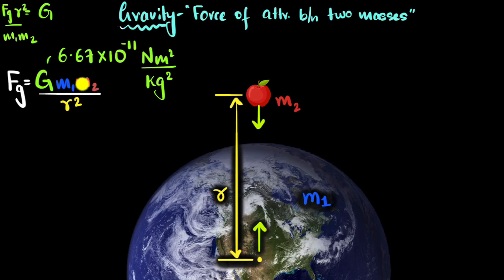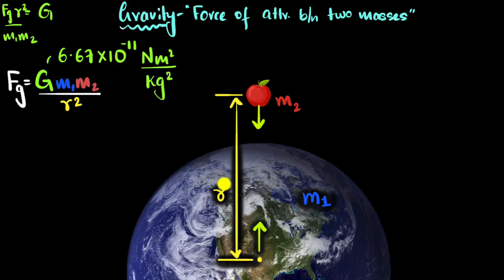However, the mass of the Earth is incredibly huge — we saw that in the beginning, it has 10 to the power 24. So because of this enormous value, the force of gravity between the Earth and all other things on Earth dominates, because Earth is very massive. And of course, we are also very close to Earth — we are almost on top of it.